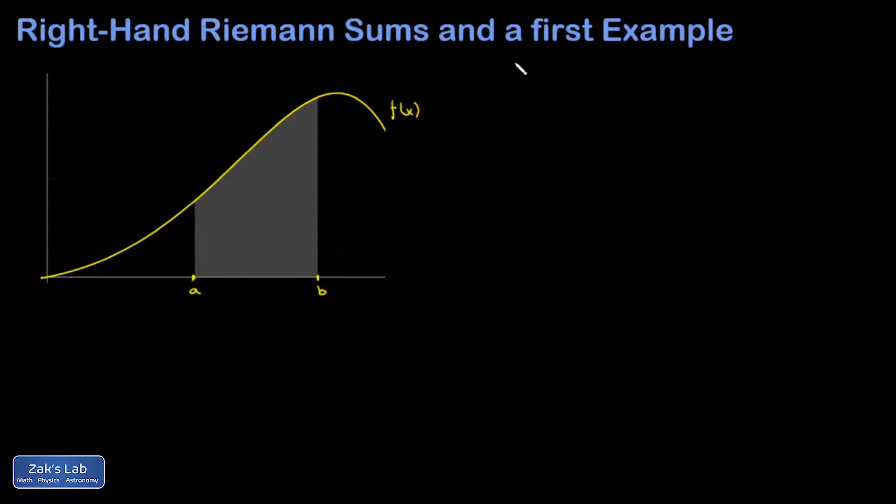In this video our goal is to approximate the area under a function f(x) on an interval a to b by slicing it into n rectangles. We're slicing into n rectangles and this time we're measuring the height of each rectangle from the right-hand side of the subintervals.